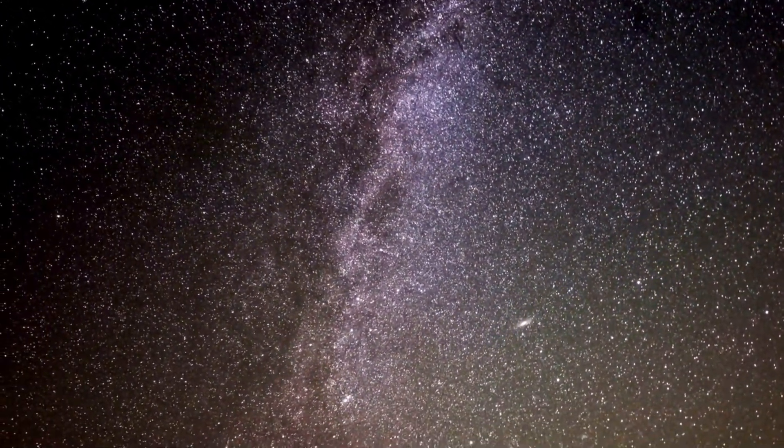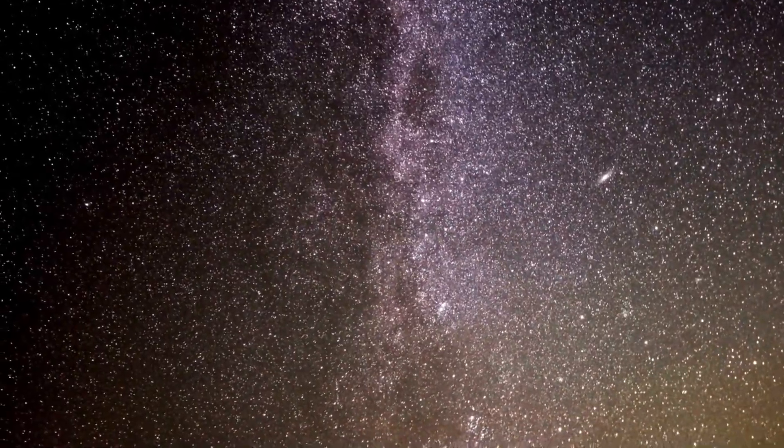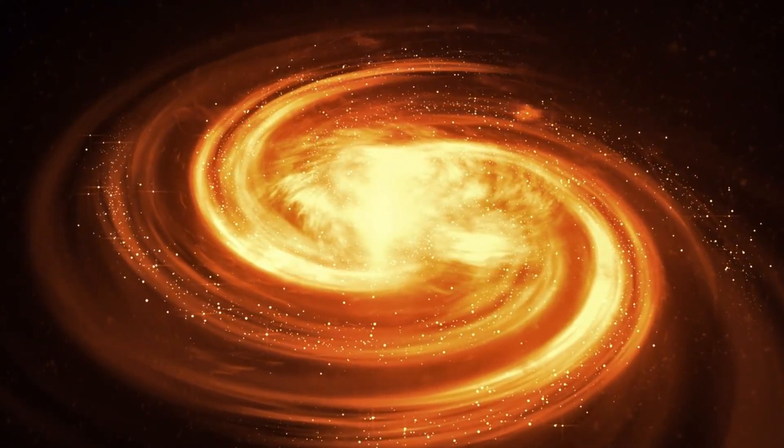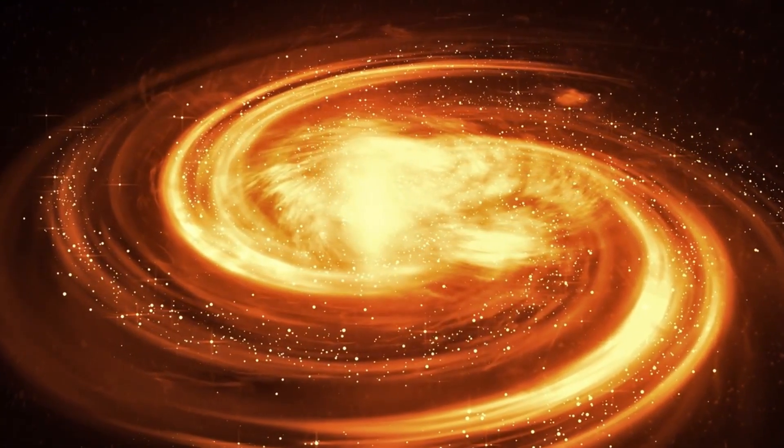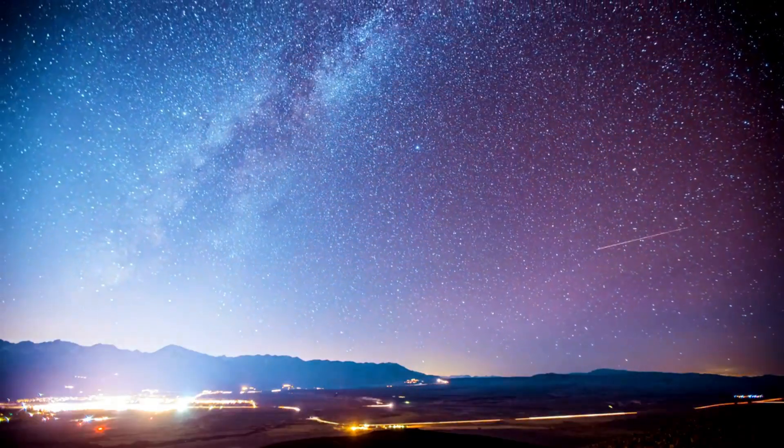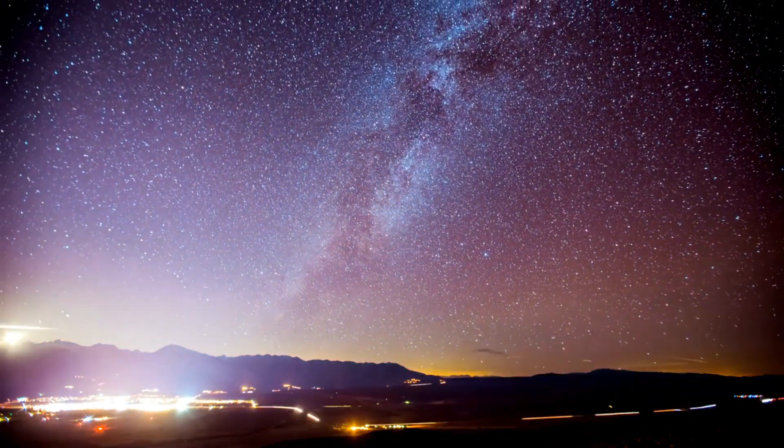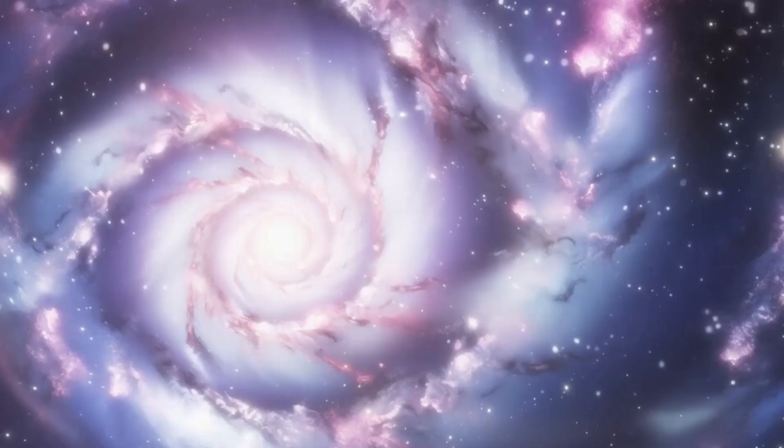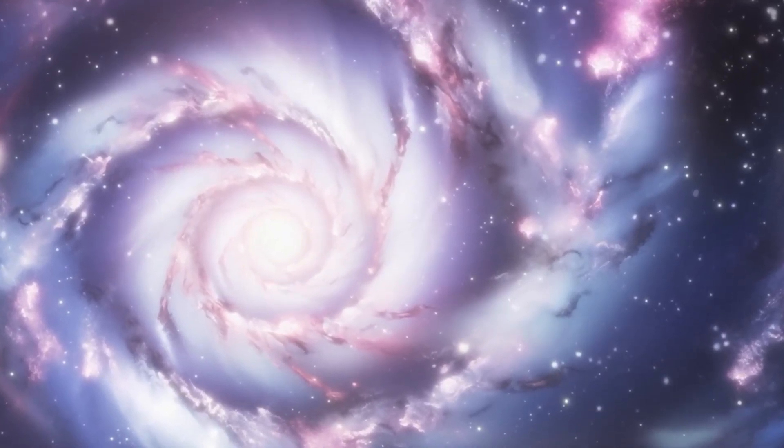You might ask why we can't just see all that exists in the universe. Most importantly, light, the fastest thing known to humankind, still takes time to travel through space. This means that when we look at distant objects, we're essentially examining the past. The farther an object is, the more its light has traveled to reach us. It's like looking through an unfathomable time machine, unrolling the history of our universe as we observe systems millions or even billions of light years away.